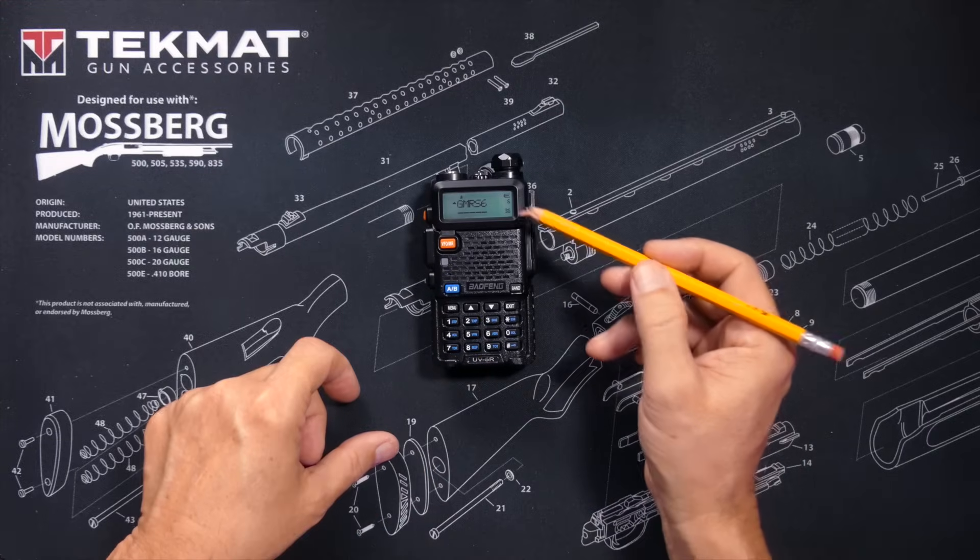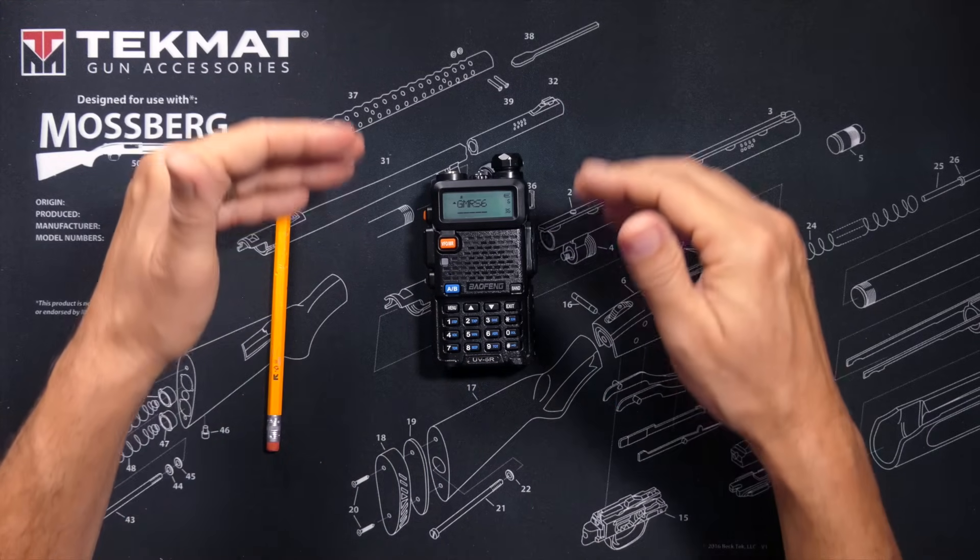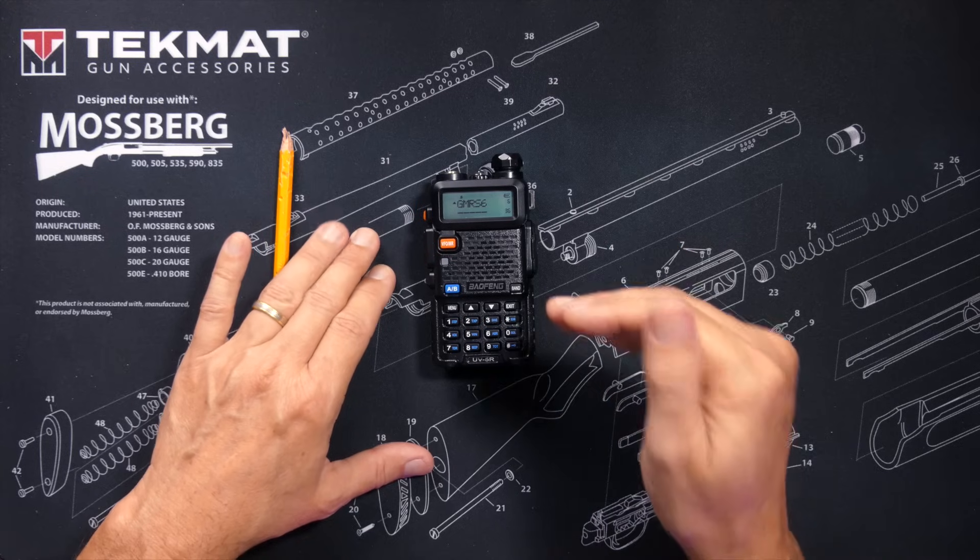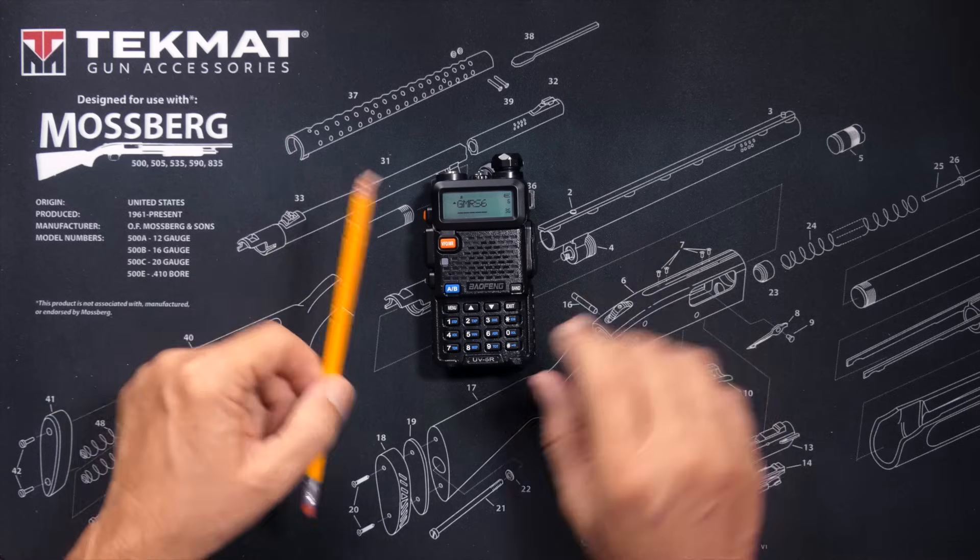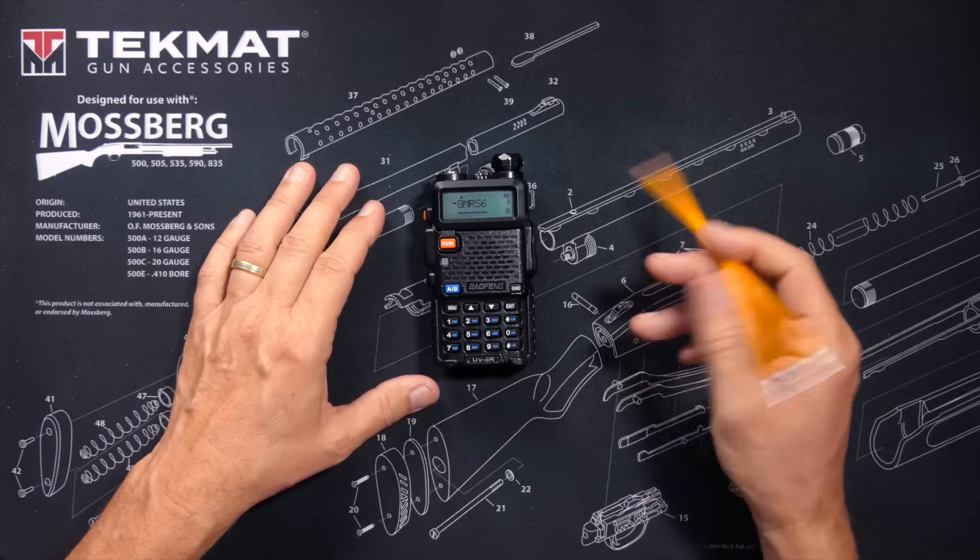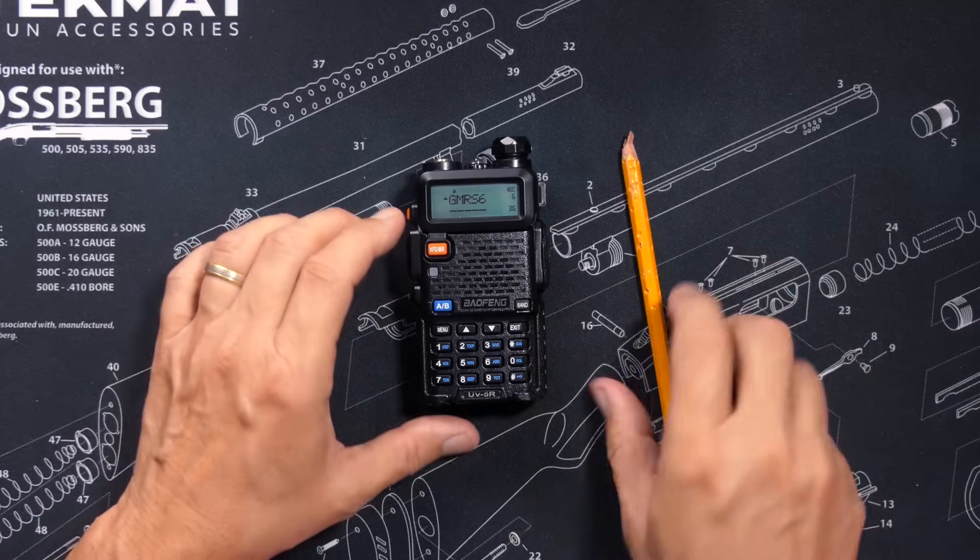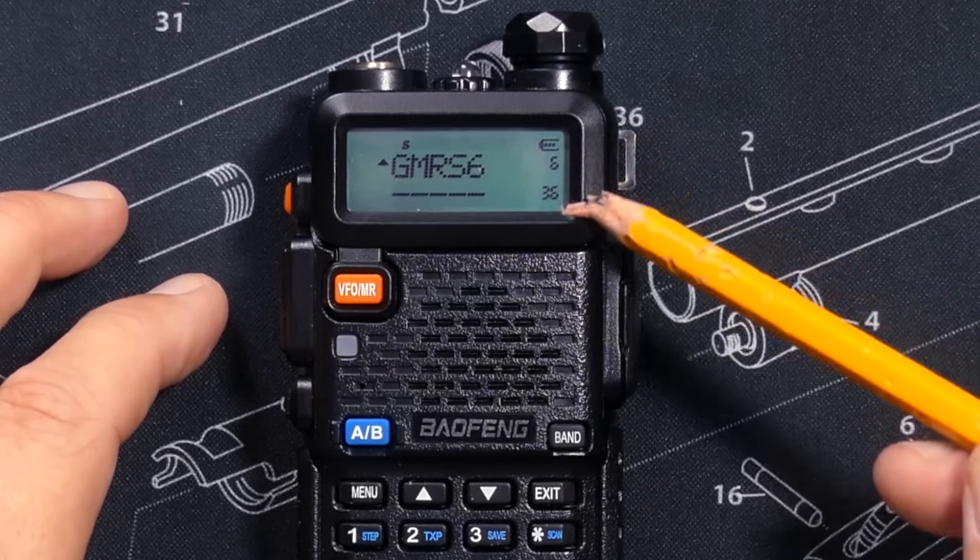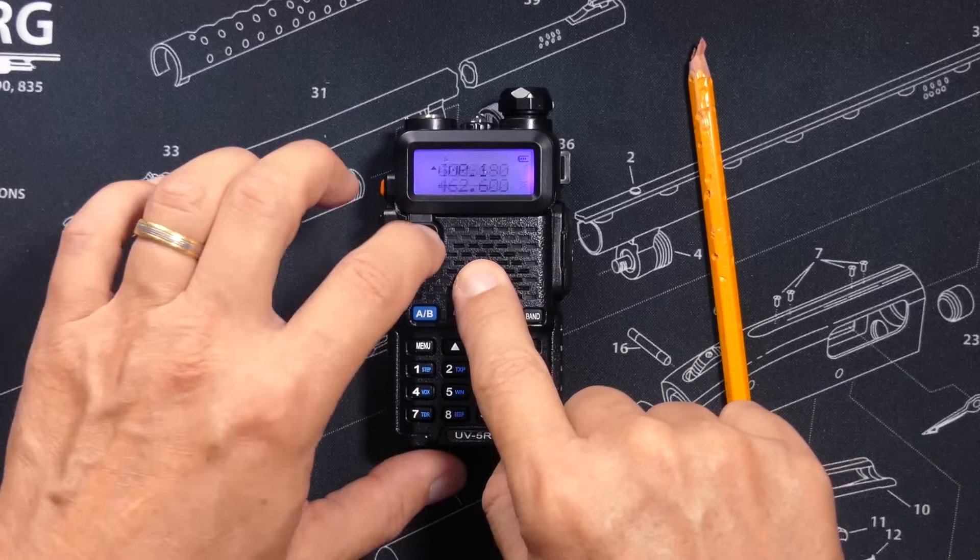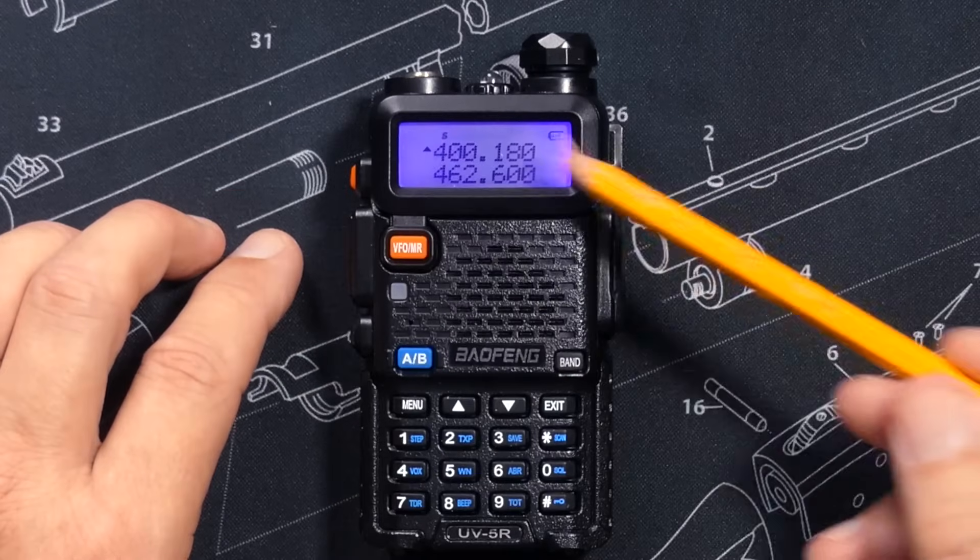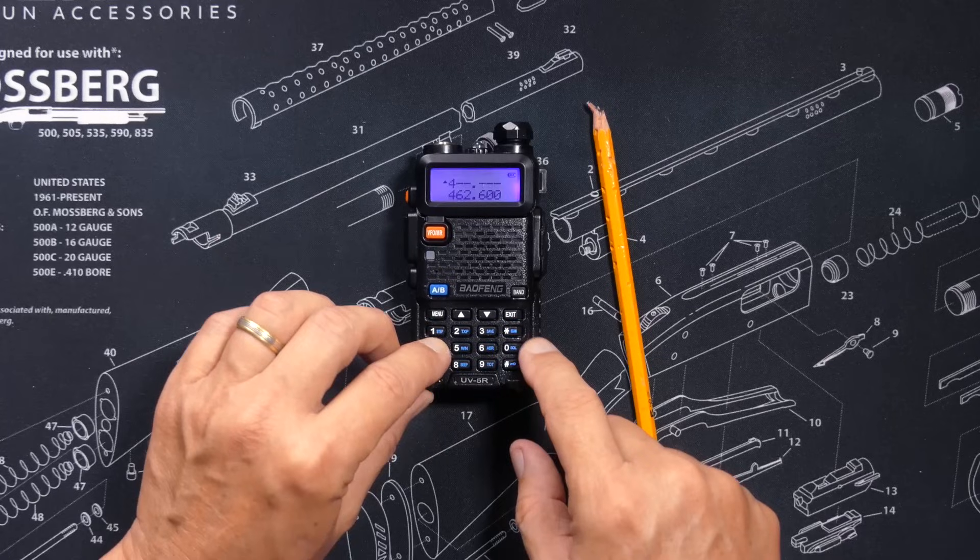Instead of scanning through your channels, you can also scan through frequencies sequentially. For this, we simply put the radio in VFO or frequency mode by pressing the orange VFO/MR button. We are now in frequency mode, as indicated by displaying frequencies and no channel numbers on the right side.